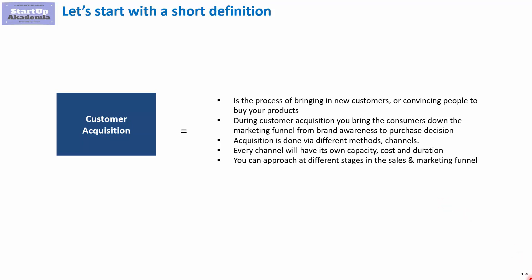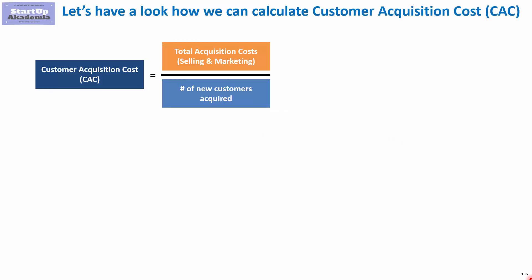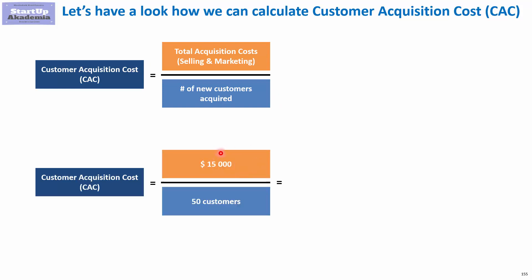When it comes to customer acquisition, the main KPI we will be looking at is the cost of acquiring the customer. We calculate it in a very simple manner: we divide all costs for a specific channel by the number of new customers acquired through that channel. For example, if we spent $15,000 on sales and marketing and acquired 50 customers, every customer on average cost us $300.